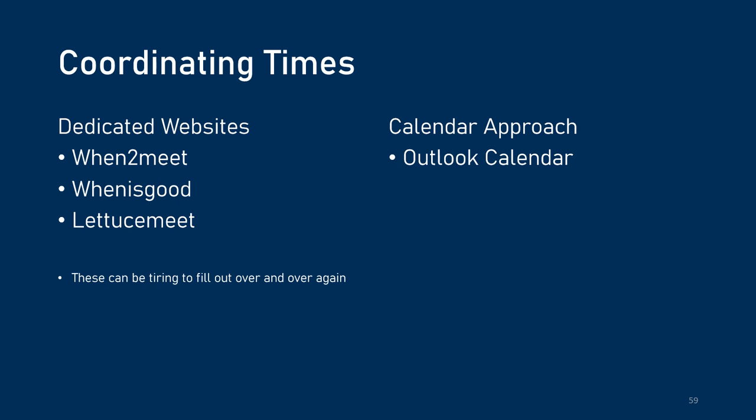Now we're going to talk about how we coordinate times in our group. There are three main websites we tend to use: When to Meet, When is Good, and Let Us Meet. These are all free options — essentially, you get a link, send it out to people, and they all fill out their times. But if you've got 15 sub-teams and you're managing like four of them, it might be a little annoying to fill out each one over and over again. So another approach is using an Outlook calendar, where you can describe when you're available and use that to coordinate times using integrated tools.